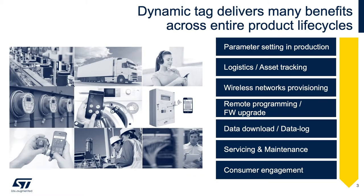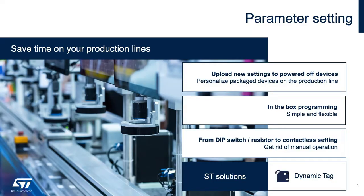A dynamic tag embedded in a product has many different use cases. It could be used for logistics or asset tracking, to automatically provision wireless networks such as Wi-Fi, Ethernet, or a Bluetooth speaker, for remote programming in the field or firmware upgrades or patches, and for servicing and maintenance of a product and updating field records.